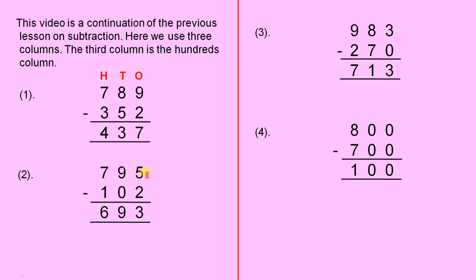For example 2, 5 take away 2 equals 3, 9 take away 0 is 9, 7 take away 1 is 6. So that's the ones column, the tens column, the hundreds column, 693.